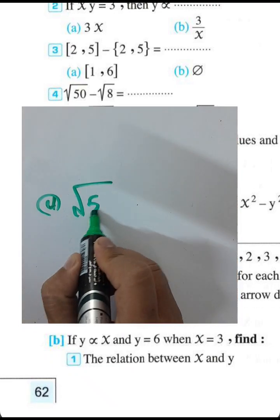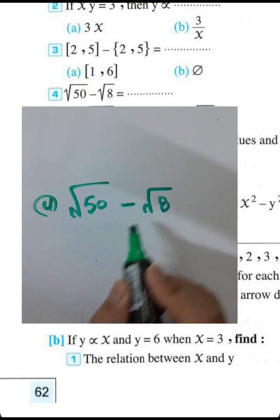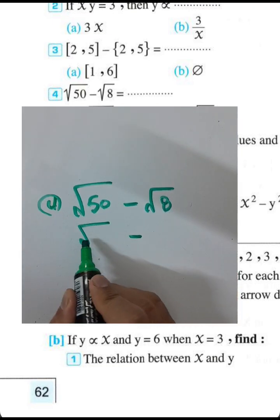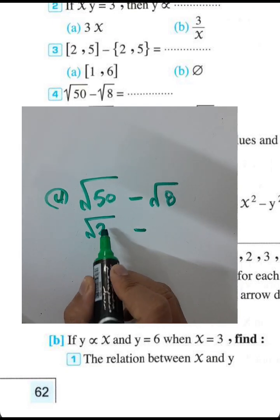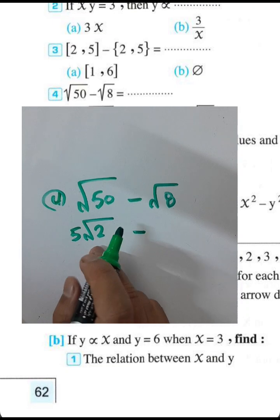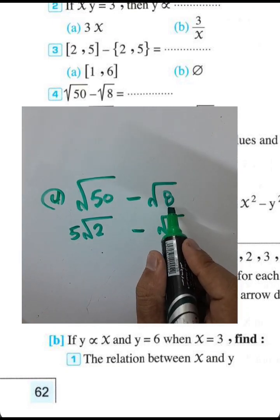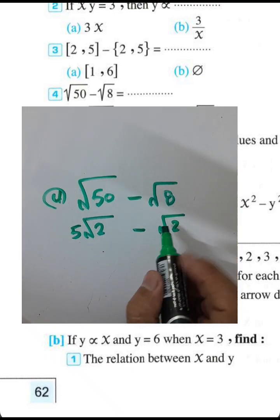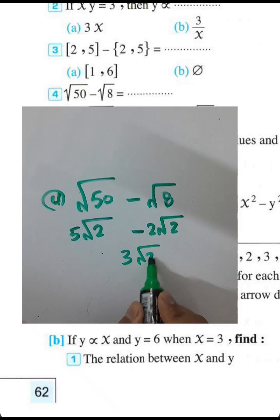Question number 4: find the square root of 50 minus the square root of 8. Square root of 50 equals square root of 25 times 2, so square root of 25 is 5, giving 5 root 2. Square root of 8 equals square root of 4 times 2, and square root of 4 is 2, giving 2 root 2. The result is 5 minus 2 equal 3 root 2.